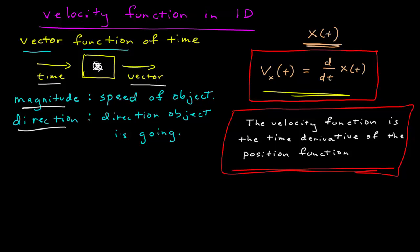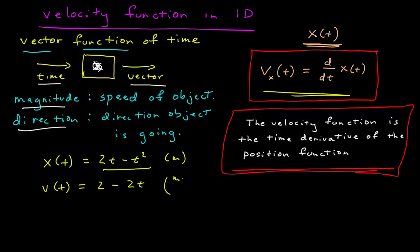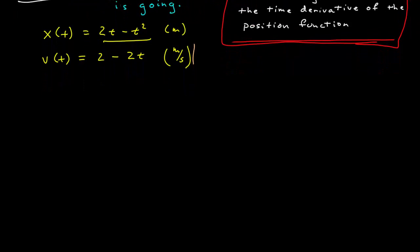Let's do an example. Say I have a position function x(t) = 2t − t², where x is in meters and t is in seconds. The velocity function v_x(t) is the derivative of this — differentiating the polynomial gives 2 − 2t. Note that if position is in meters and time is in seconds, then velocity is in units of meters per second. As long as you have the position function, you just differentiate it to find the velocity function.